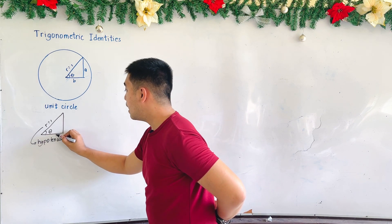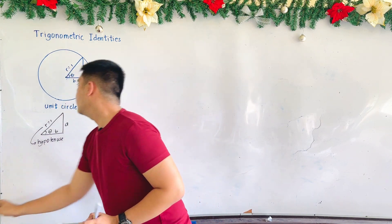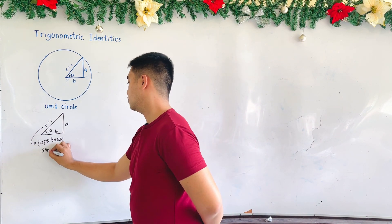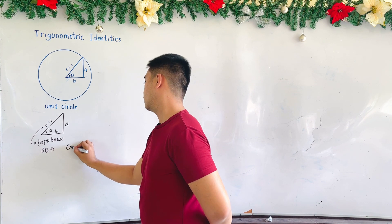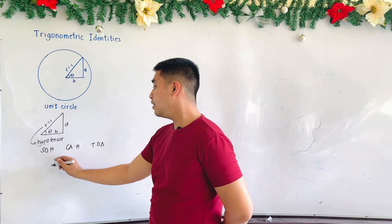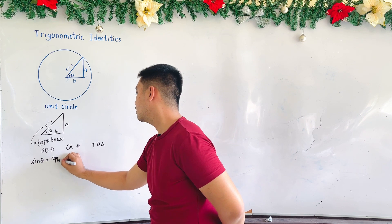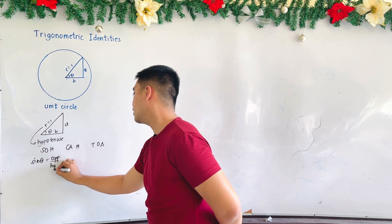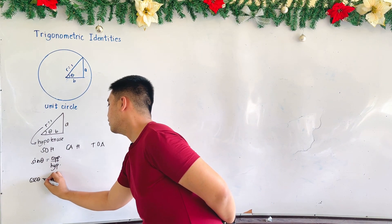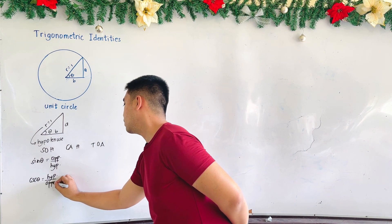This is our angle B and this is our angle A. From this triangle, let us define our SOH-CAH-TOA. For SOH, that is sine theta. Sine theta is equal to opposite over hypotenuse. The reciprocal of sine would be cosecant theta. Therefore, cosecant theta is hypotenuse over the opposite side.